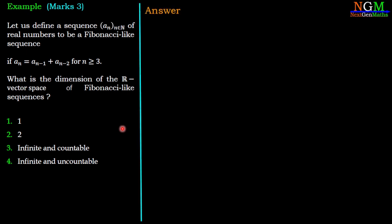Here we are going to discuss the real vector space of Fibonacci-like sequences. So we construct set of Fibonacci-like sequences V = {(aₙ) such that aₙ = aₙ₋₁ + aₙ₋₂ for n ≥ 3}.